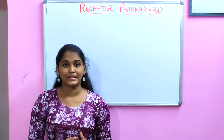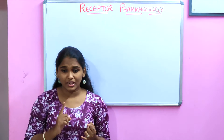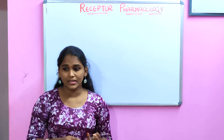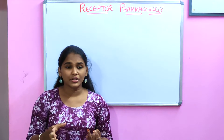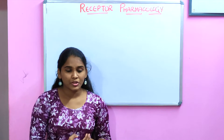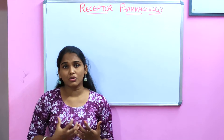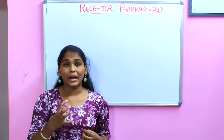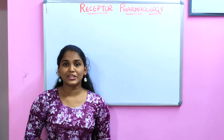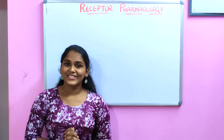The ligand may be anything — hormones released from the endocrine system, toxins released by specific bacteria or viruses in a diseased condition, drugs that we take, or neurotransmitters. For any of these to show action, the primary requirement is binding of such a compound to the receptors present on the cell surface. In this video we'll be learning about the transducer mechanisms in receptor pharmacology. Let's get started.